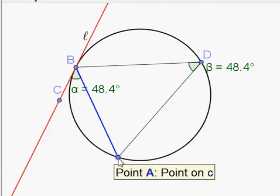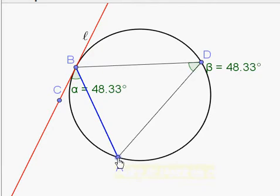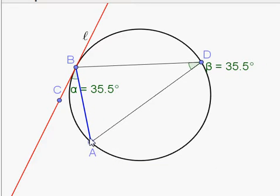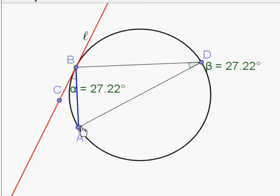Now if we move A around so that the chord gets a little bit smaller, you'll see that the angle between the tangent and the chord shrinks, and so does the angle across the circle from it. And it's the same value all the time.